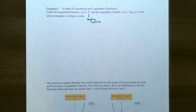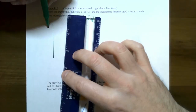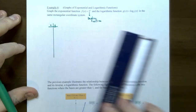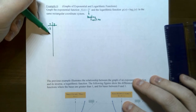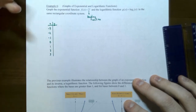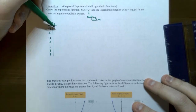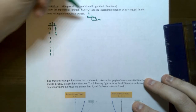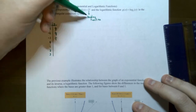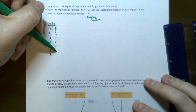Let's graph the exponential function first and review what we were doing in the previous section. We made an xy table. We could choose any x value because the exponential function's domain was all real numbers: negative 3, negative 2, negative 1, 0, 1, 2, and 3. Substituting these into the exponent where the base is 2: 2 to the negative 3 is 1/8, 2 to the negative 2 is 1/4, 2 to the negative 1 is 1/2, 2 to the 0 is 1, 2 to the 1 is 2, 2 squared is 4, and 2 cubed is 8. Notice the values are doubling because it's the doubling function.